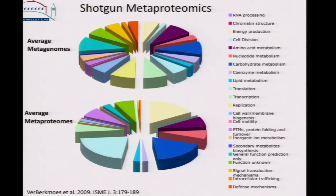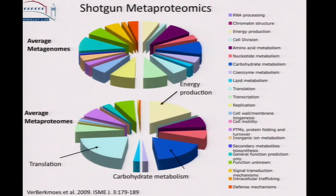This shows an average of the metagenomes we had available at the time — average COG categories of function from the metagenome level compared to average COG categories for metaproteomes. In the metagenomes, there's a relatively even distribution of COG categories. But if you look at the proteomes, it's really enriched in certain functions — for example, translation, energy production, and carbohydrate metabolism. These are functions you would expect to dominate in the gut environment. This is a good sign that the information we're getting from the proteome is more indicative of the function actually being carried out in that system.